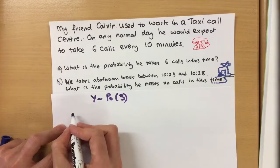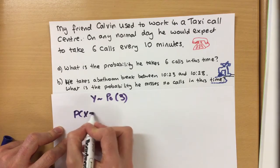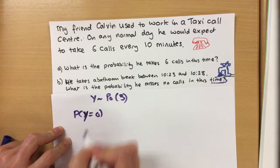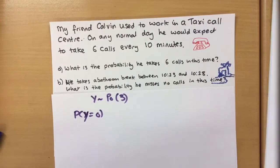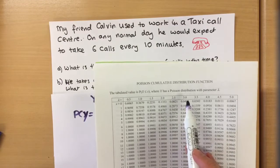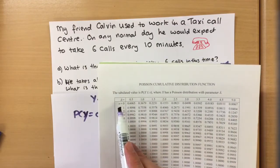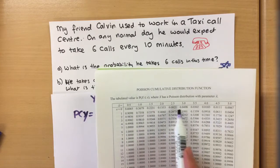So what's the chance that he gets zero calls in this time? Again, luckily as it happens three is on our table, what luck is that. So a mean of three and a chance of getting zero calls is going to be...